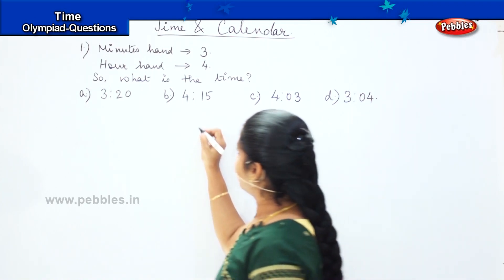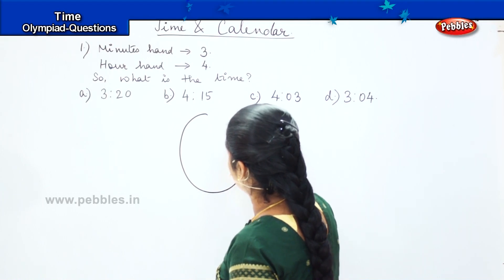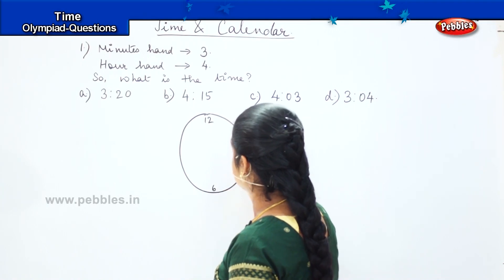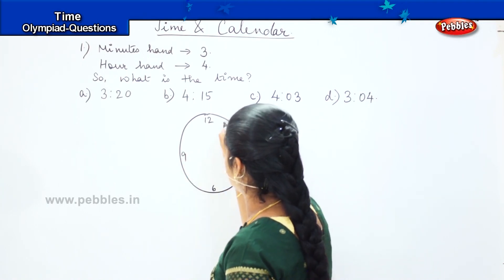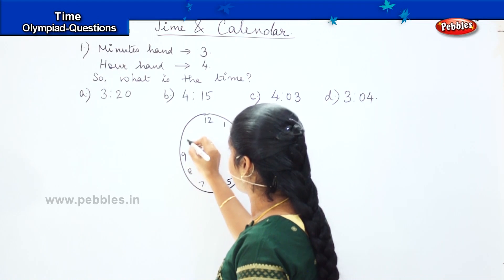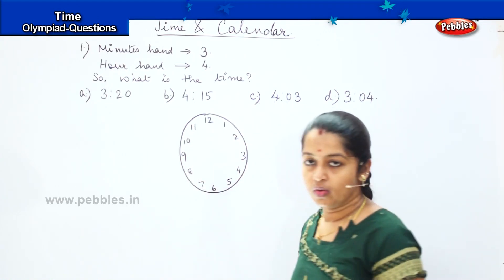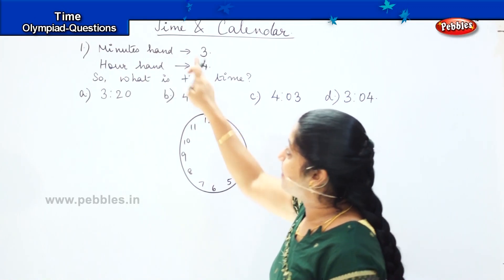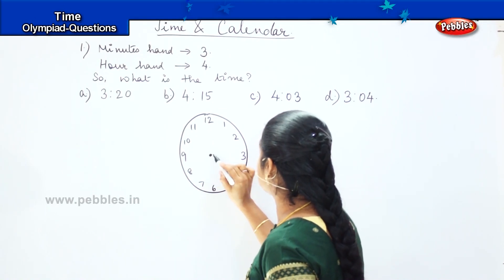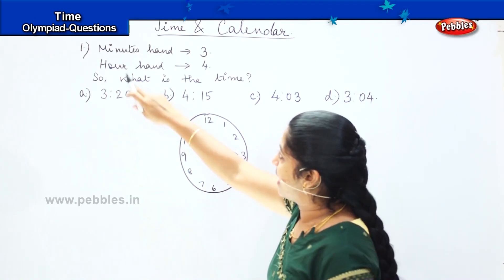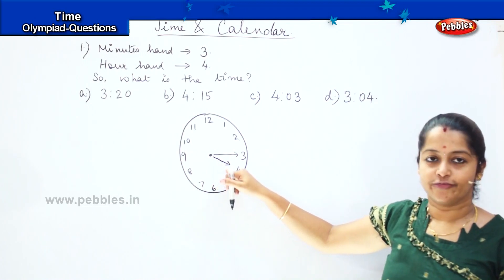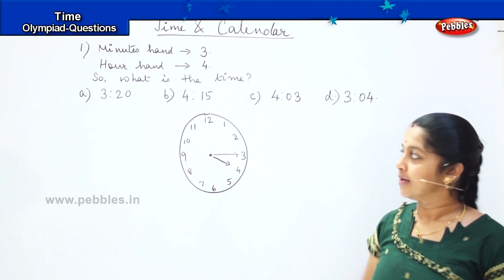So first what we will do is we will draw the watch, and we will highlight the in-between numbers. Now, what is my question telling? My question is telling my minutes hand — the minutes hand, which means the lengthier hand — so my minutes hand is at 3 and my hour hand is at 4. So the smaller one is at 4 and my bigger one is at 3. So what is the time?